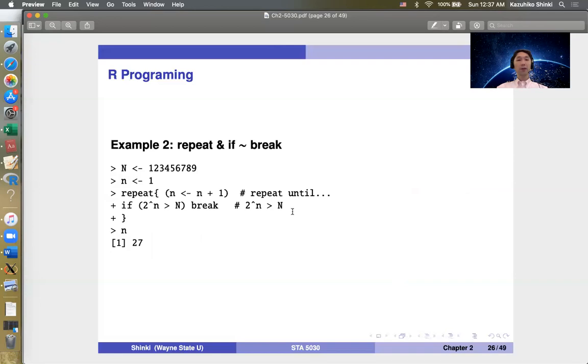Another way is to use repeat, almost the same thing, but the statement is slightly different. The repeat function repeats something until some condition is satisfied. Capital N is the same as before. The lowercase n starts with 1, then we increase n by 1. This argument comes first. Then if this condition is satisfied—2^n gets larger than capital N—we stop there with break. Then it returns n. So just the order of these two are different.